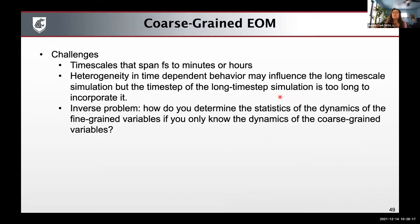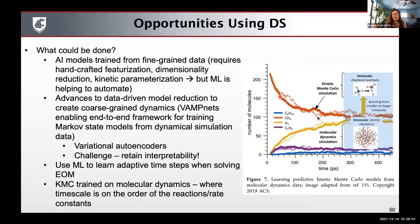There are a lot of challenges and opportunities for developing new coarse-grained models. Thinking about coarse-grained equations of motion: some of those challenges might be that you want to span time scales going from femtoseconds to minutes or hours, that the heterogeneity and time-dependent behavior described with persistent homology could influence long time scale simulations, but that the time step of those long time scale simulations is too long to incorporate that heterogeneity. You also have the inverse problem: how do you determine the statistics and dynamics of fine-grained variables if you only know the dynamics of coarse-grained variables? There are many opportunities for developing techniques using data science, whether it's training AI/ML models to fine-grained data or advancing data-driven reduction models to create coarse-grained dynamics. I encourage you to go to the paper to read more.